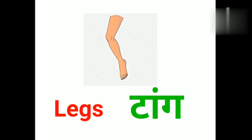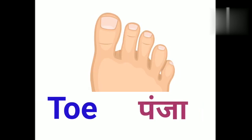This is legs. Legs means tongue. This is toe. Toe means panja.